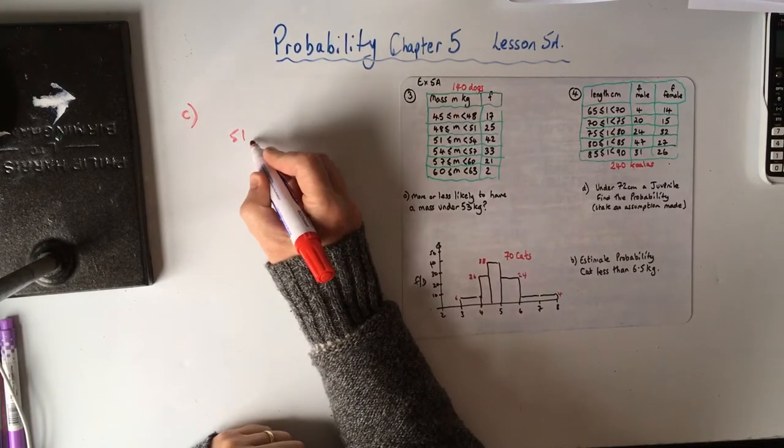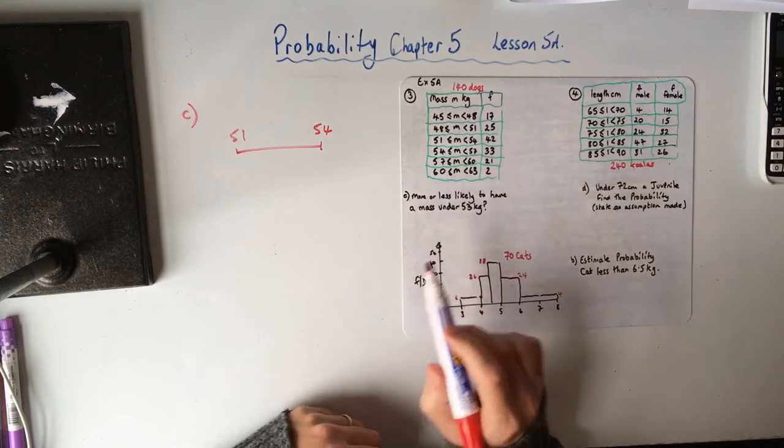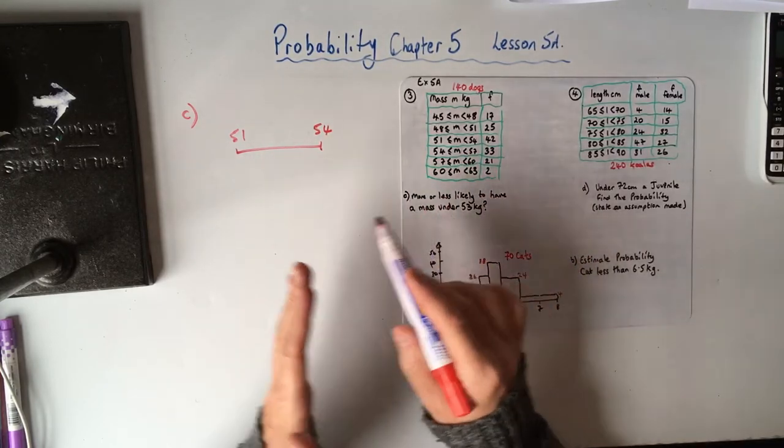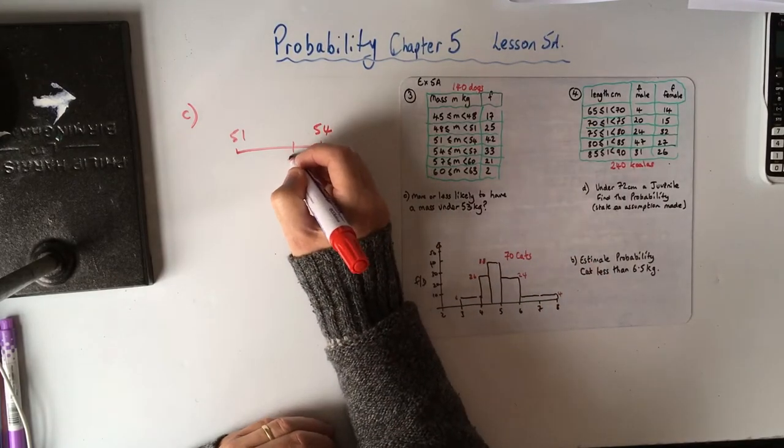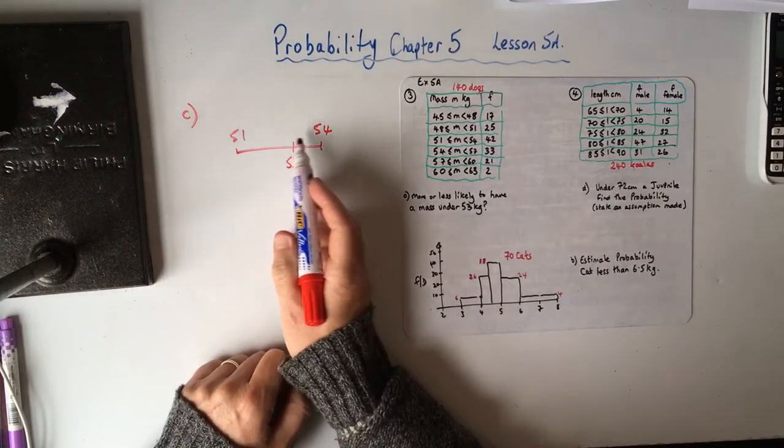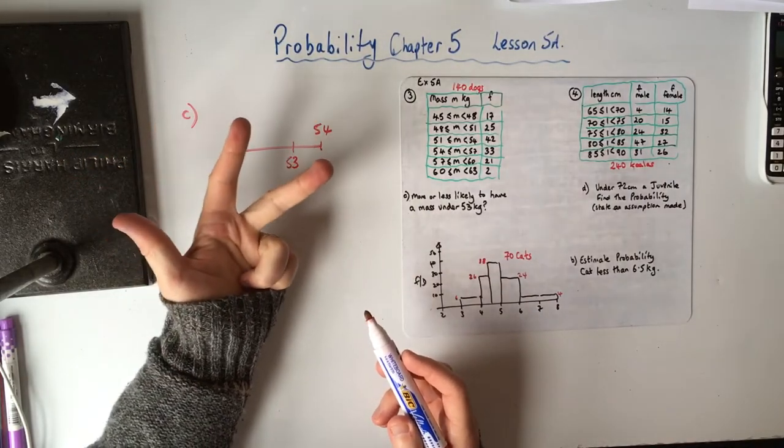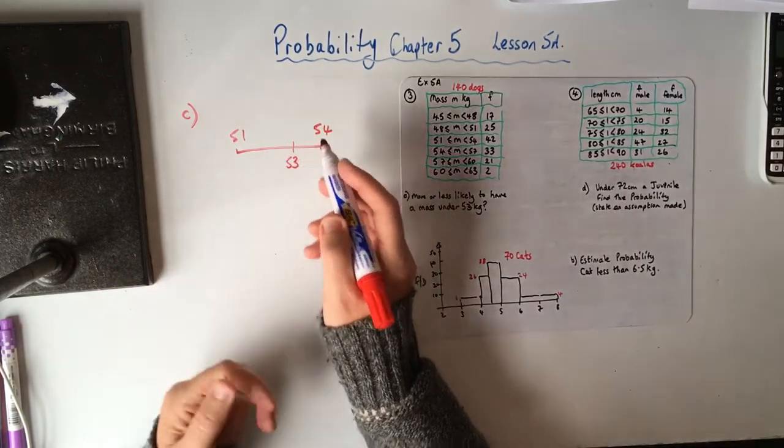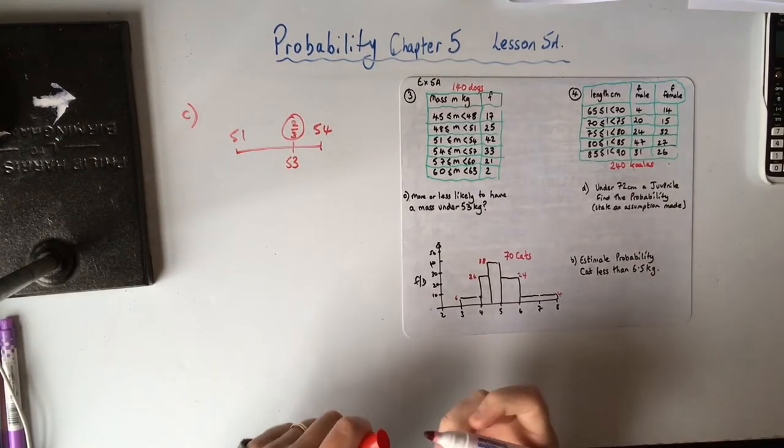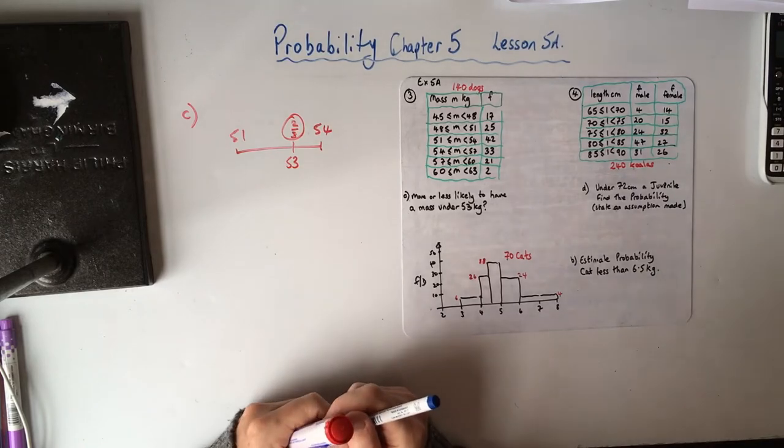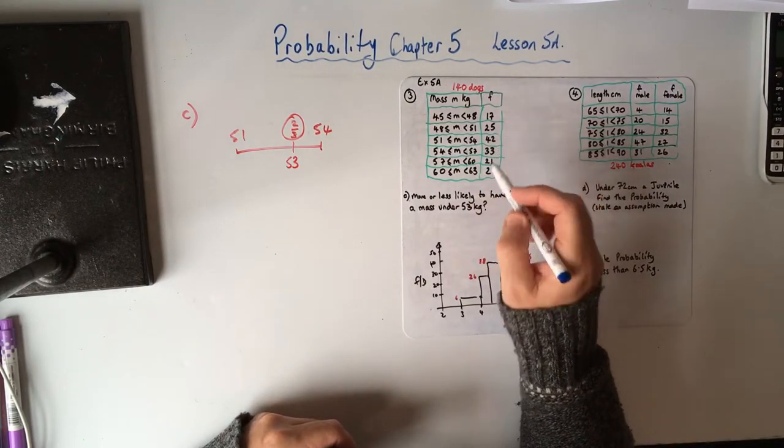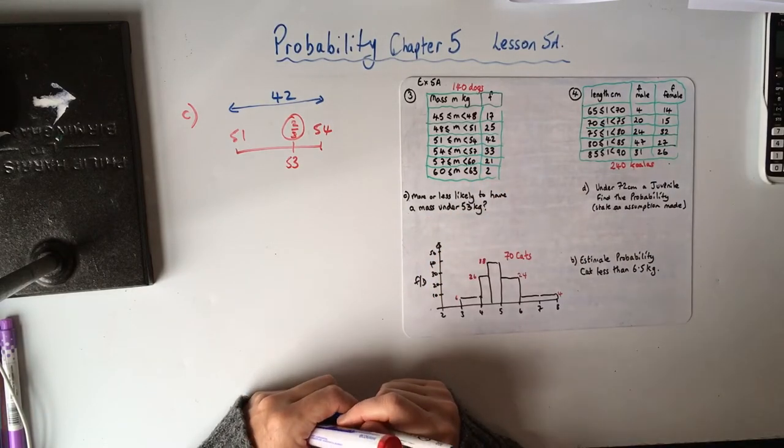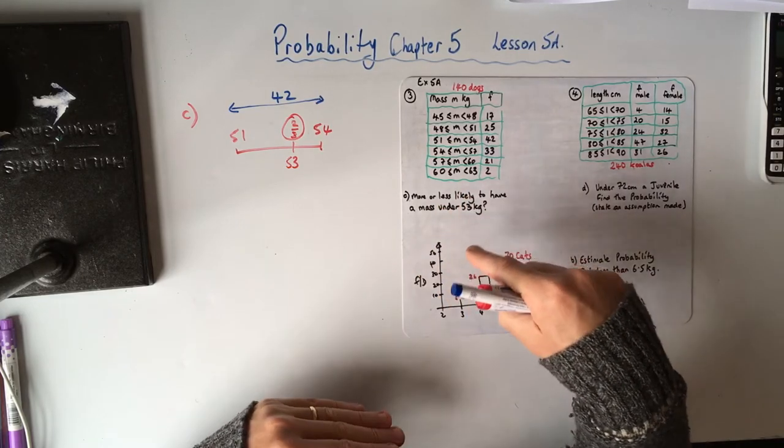So we're taking this group here from 51 to 54, and it says 53 kilograms, so it's there. This here is a gap of 51, 52, 53, 54, is a gap of three from there to there, and 53, so this is two thirds along. And they've made the numbers really easy for you here, because they've given you the numbers nice within that group. There are 42 dogs.